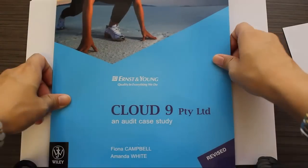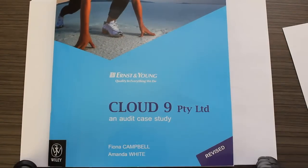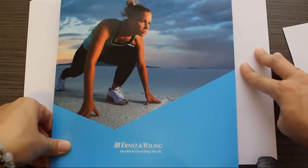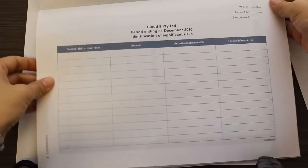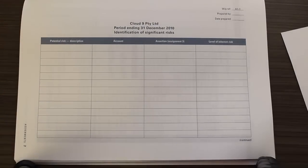Good morning everyone. Today we're going to have a short video explaining Assignment 1 from the Cloud9 Casebook. This is the book here — it's an Australian auditing case about a running shoe company. There's some background information, but Assignment 1 requires you to fill out this particular table.